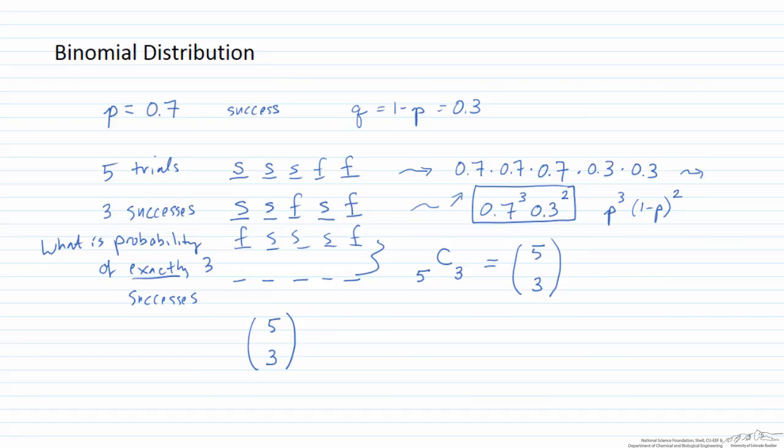...each arrangement is adding to our total probability of having three successes in five trials. The total probability of having exactly three successes then would be the total number of ways that we can arrange those three successes in five different trials times the probability of any given one of those arrangements being the way it is. So in this case it is five choose three times 0.7 cubed times 0.3 squared. And that is the overall probability. And with probability functions we would write this as f of three is going to be that.